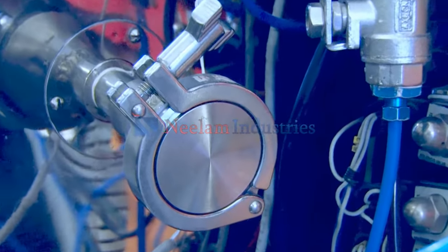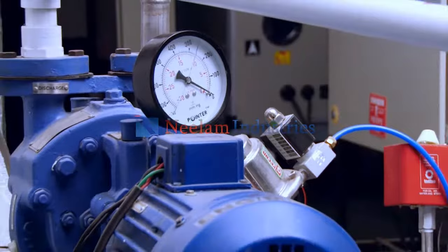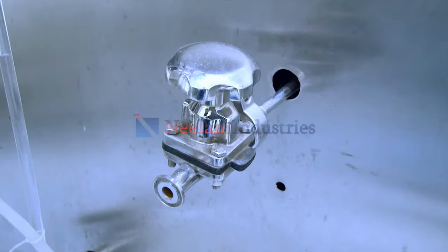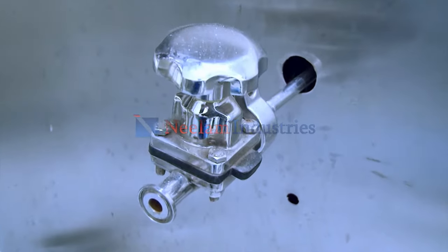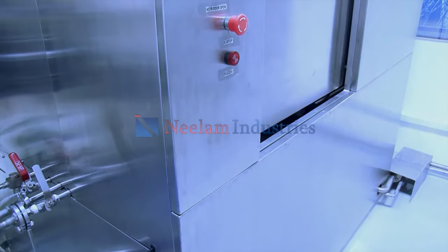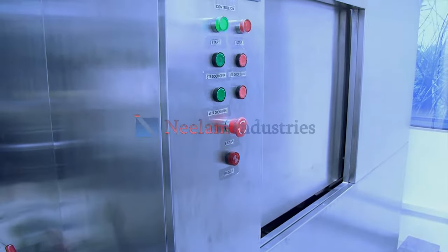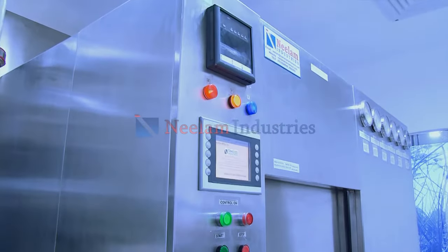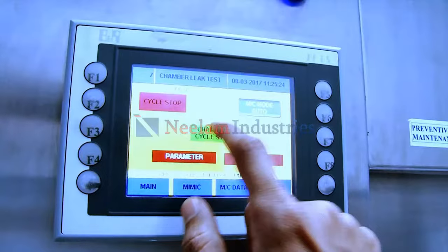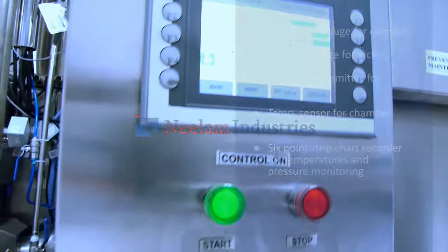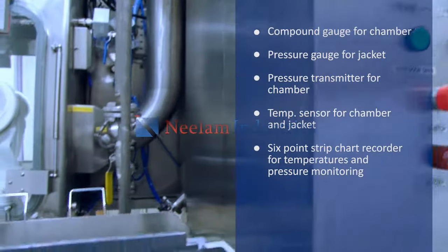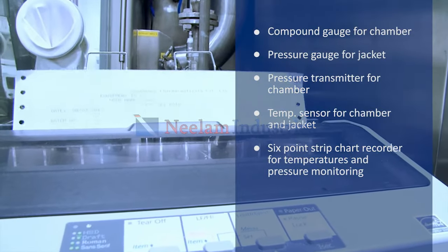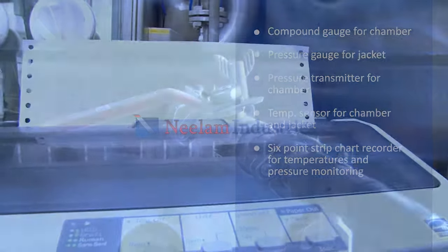All process pipelines are orbital welded and provided with tri-clover ends. Validation ports are provided for insertion of multiple temperature sensors for validation of the sterilizer. A water ring type vacuum pump is included for process vacuum, along with a steam sampling valve for checking steam quality.